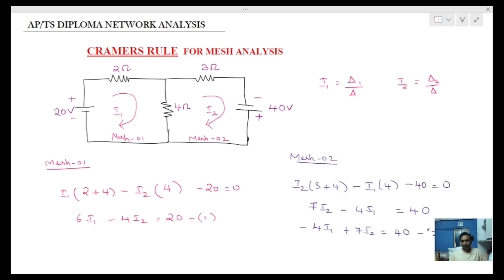This is equation 2. So: minus 4i1 plus 7i2 is equal to 40. We now need to find delta, delta 1, and delta 2 values. That is why we use Cramer's Rule — using matrices to find the values.